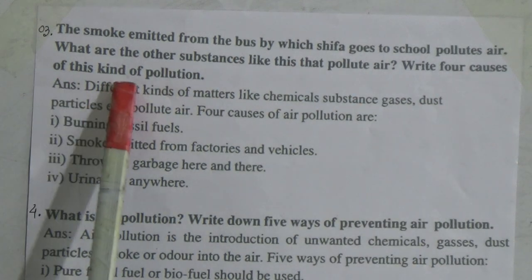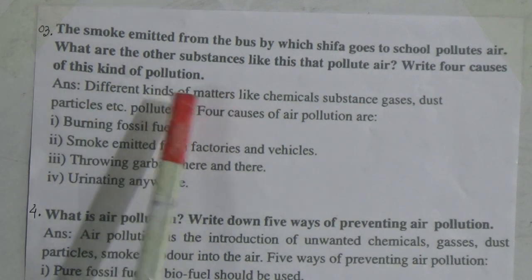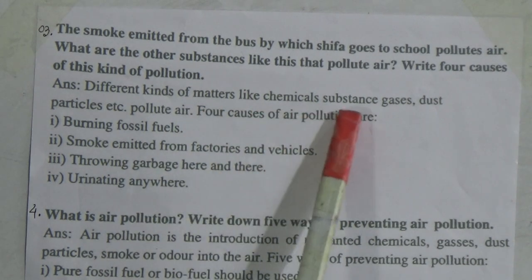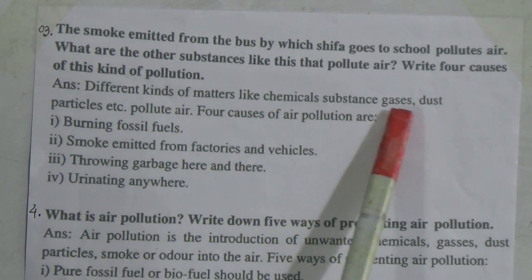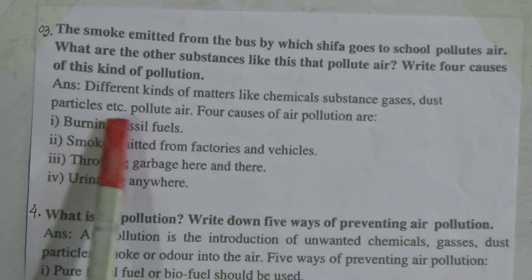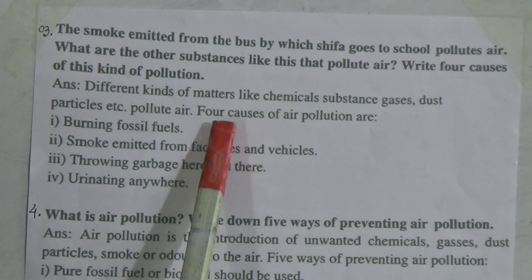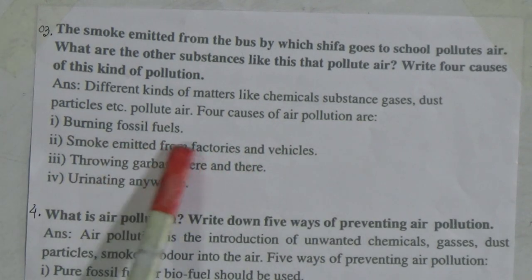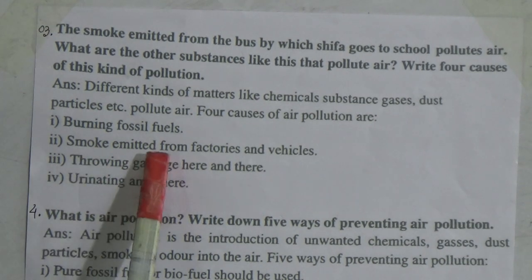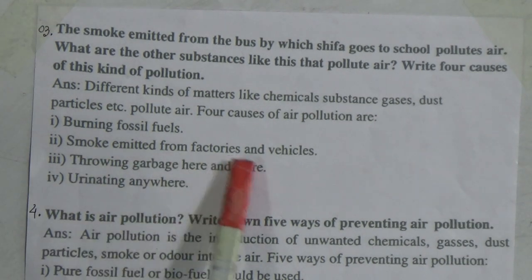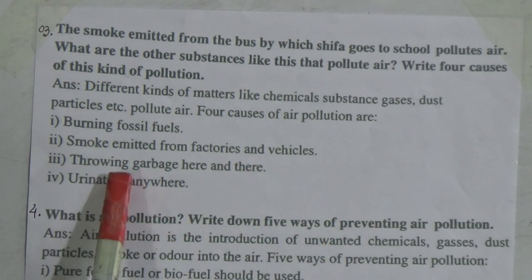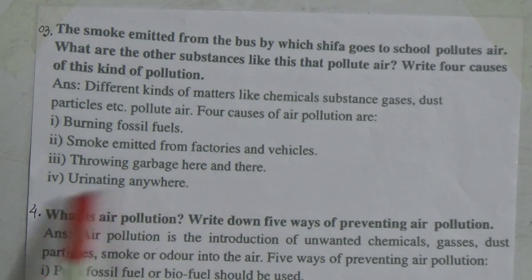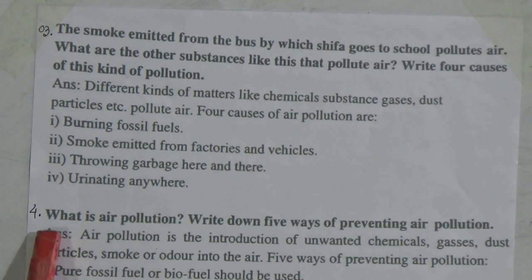Write four causes of this kind of pollution. The answer is: different kinds of matter like chemical substances, gases, dust particles, etc. pollute air. The four causes of air pollution are: first, burning fossil fuels; second, smoke emitted from factories and vehicles; third, throwing garbage here and there; and fourth, urinating anywhere.